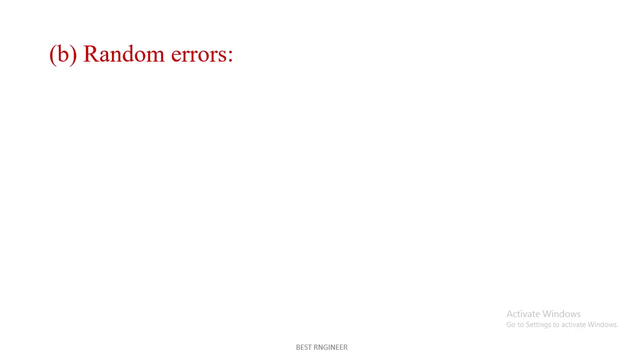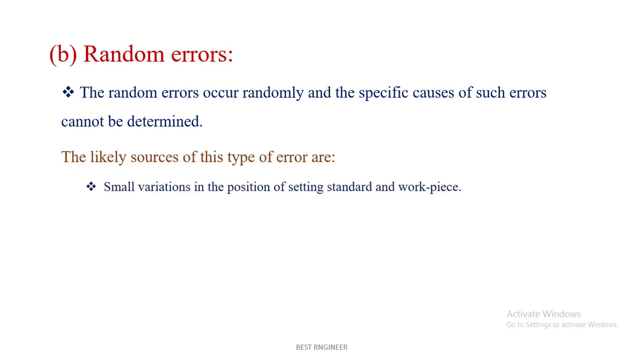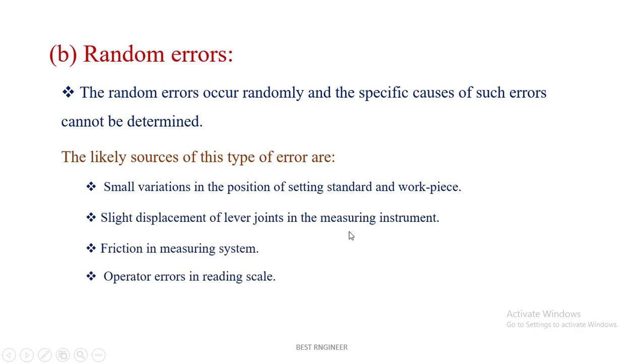Let you see the random errors. The random errors occur randomly and the specific causes of such errors cannot be determined. The likely sources of this type of error are small variations in the position of setting standard and workpiece, slight displacement of levers and joints in the measuring instruments, friction in the measuring systems, and operating error in reading scales. These all are causes for the random errors.